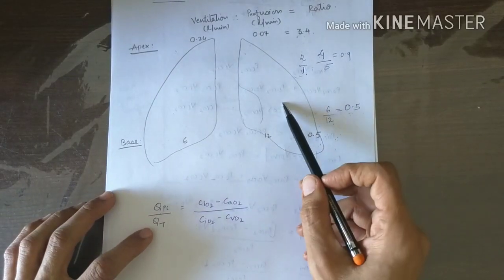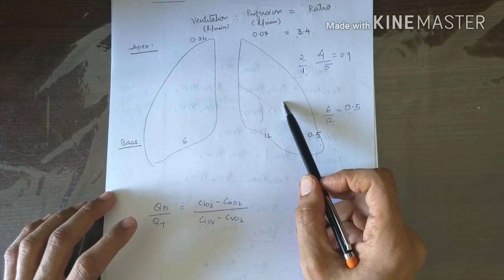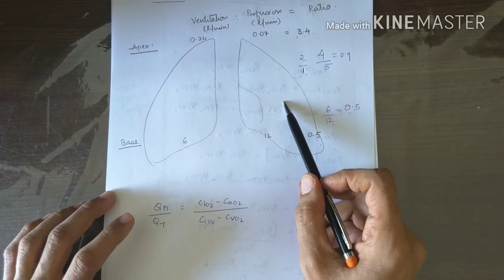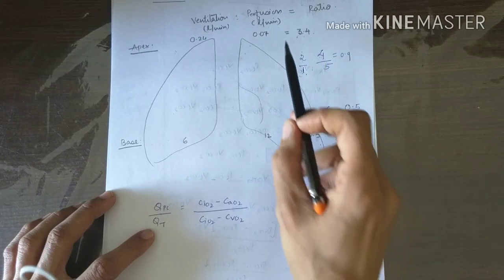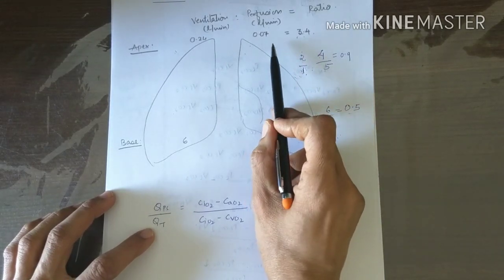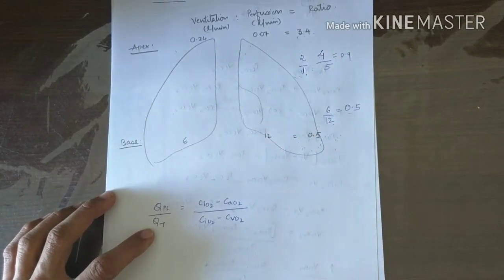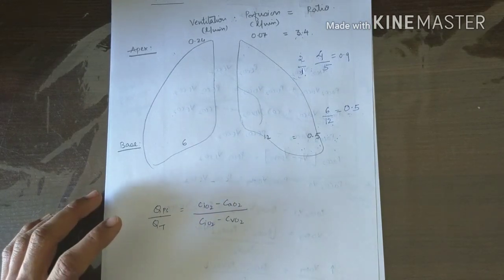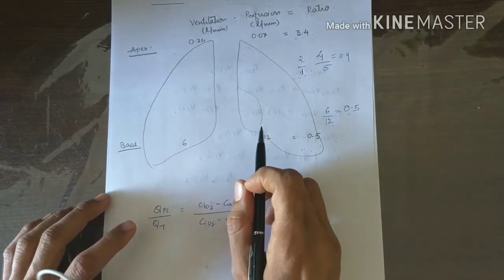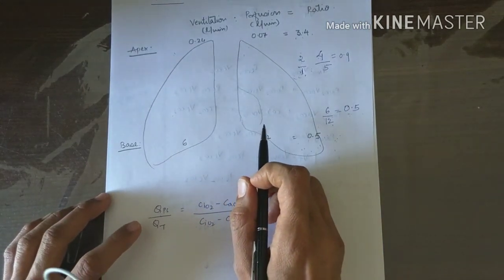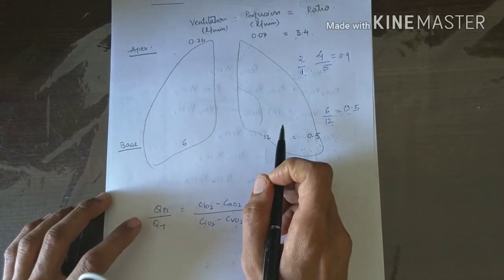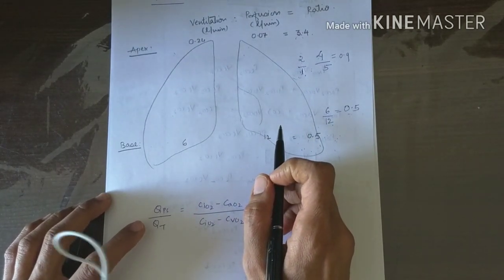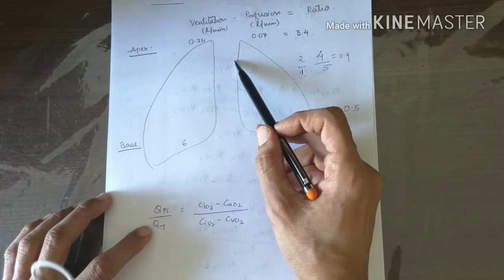Applied aspect: because of high ventilation perfusion ratio, the apical alveolar air has low partial pressure of CO₂ and high partial pressure of O₂. Therefore, apical alveoli are predisposed to tuberculosis, because high alveolar PO₂ provides a favorable environment for the growth of Mycobacterium tuberculosis.